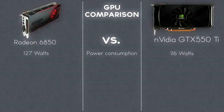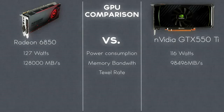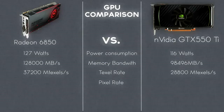So the GTX 550 Ti wins on power consumption by 9%. In memory bandwidth, the 6850 is theoretically 30% faster, so the 6850 wins this. Also in texel rate the 6850 is faster by 29%, and in pixel rate it is 15% faster.